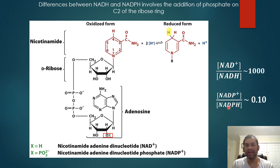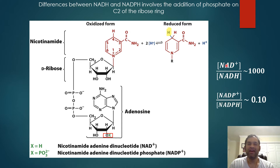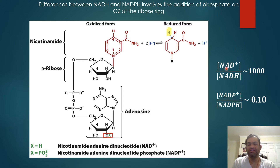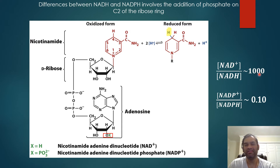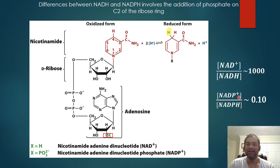The reduced form is the form that has H's on it. For NADPH, the ratio between the oxidized and the reduced form inside a typical cell is about 0.10, so the reduced form is more prevalent. Contrast that with NADH, which is mostly involved in enzymatic reactions such as the dehydrogenation reactions in glycolysis — like glyceraldehyde-3-phosphate dehydrogenase. For NADH, the ratio between the oxidized and reduced form is about 1,000, meaning the oxidized form, NAD+, is more prevalent in a typical cell.